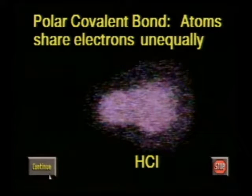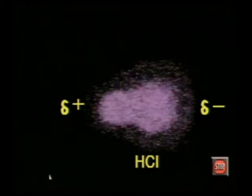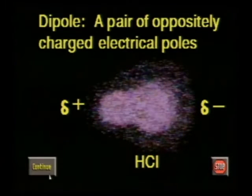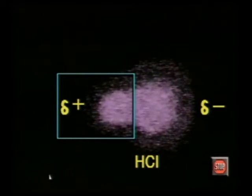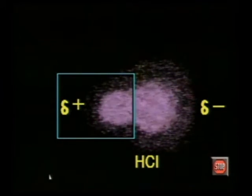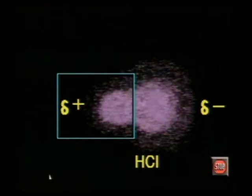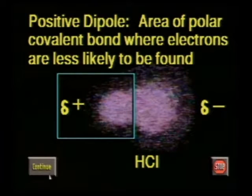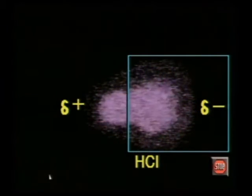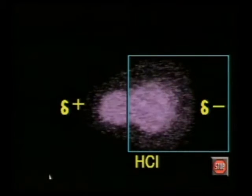Hydrogen chloride has a polar covalent bond. A polar bond is similar to a magnet — it has oppositely charged poles, which is called a dipole. The positive pole, represented by a lowercase delta with a positive sign, is the end of the molecule that is slightly more positive on average because the valence electrons in a polar covalent bond are less likely to be found there. The negative pole, represented by a lowercase delta with a negative sign, is the end that is slightly more negative on average because the valence electrons are more likely to be found there.